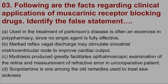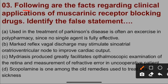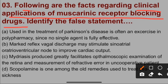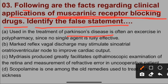Question number three: The following are facts regarding clinical applications of muscarinic receptor blocking drugs — that is, anticholinergic drugs. Identify the false statement. Option A states: use in the treatment of Parkinson's disease is often an exercise in polypharmacy since no single agent is fully effective. This is true because anticholinergic drugs are used in Parkinson's disease, but no single drug is fully effective.